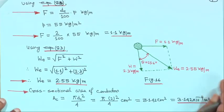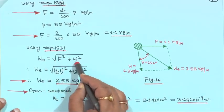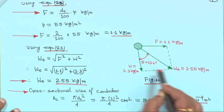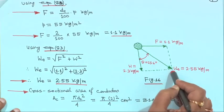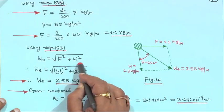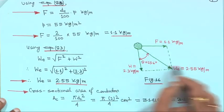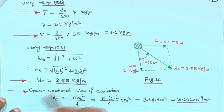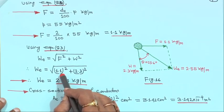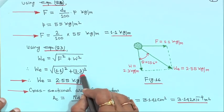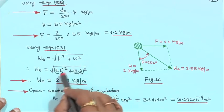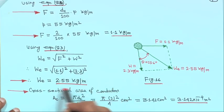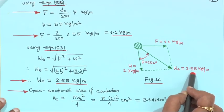Using equation 83: We is equal to root over (F squared plus W squared). F is 1.1 kg per meter and W is 2.3 kg per meter. So We will be root over (1.1 squared plus 2.3 squared), which becomes 2.55 kg per meter. That is the resultant effective weight of the conductor.